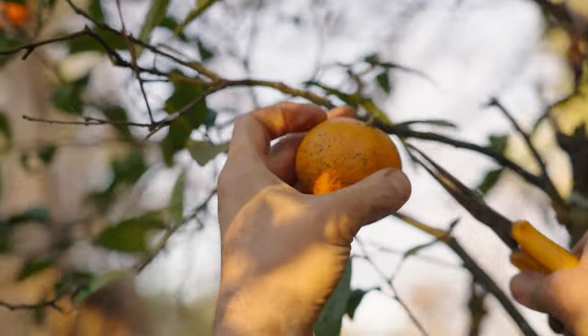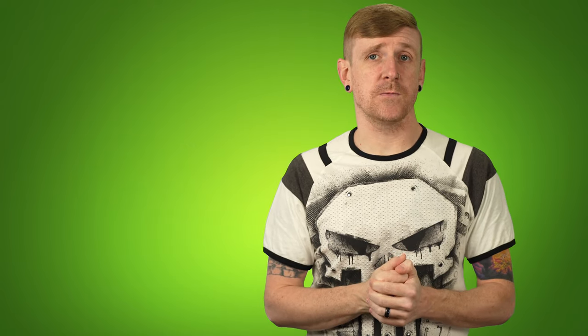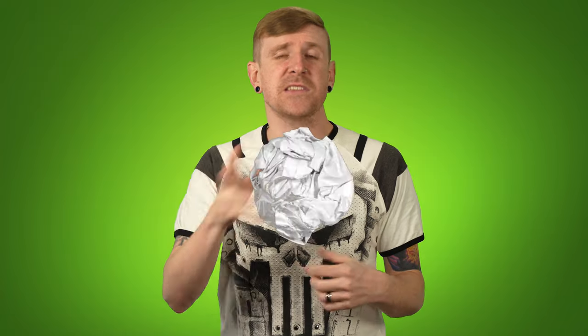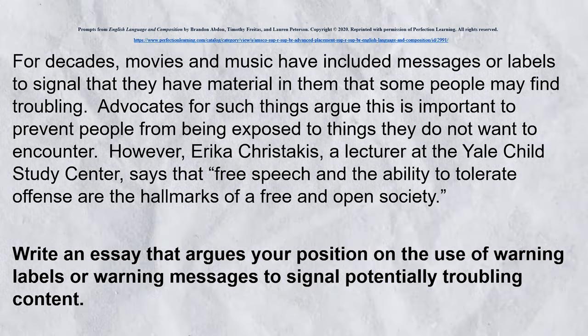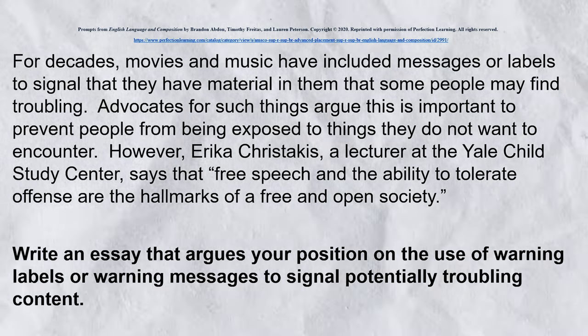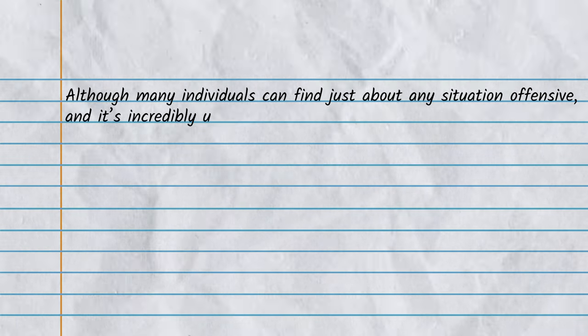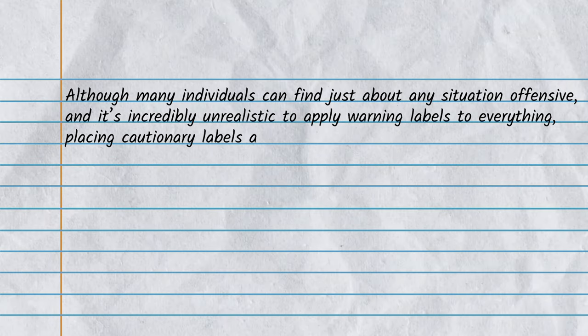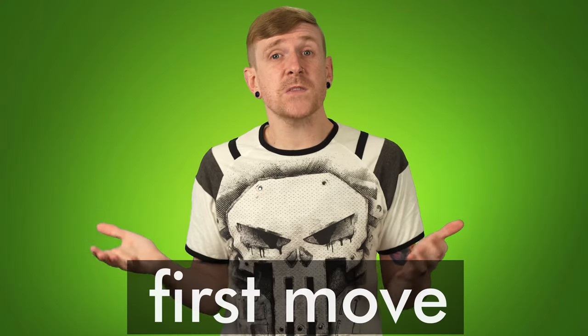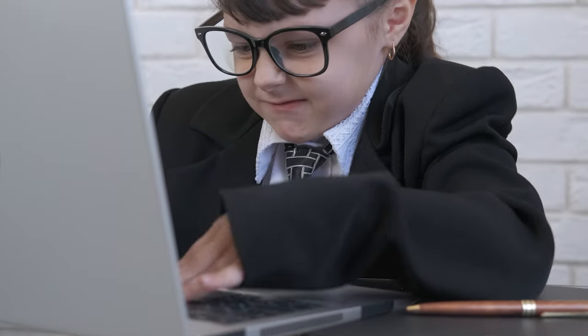Back to the show. When you're writing an argument and you begin picking your examples for your body paragraphs, you want to make sure that you follow the direction of your thesis. Before I show you the thesis we're going to be working with, I want to remind you of the prompt that we're responding to — it comes from the AMSCO Lang and Comp textbook and it can be seen right here on your screen. The thesis we're going to rely on for direction: 'Although many individuals can find just about any situation offensive and it's incredibly unrealistic to apply warning labels to everything, placing cautionary labels and ratings on commonly agreed upon troubling content is appropriate.' Based on this thesis, the first move I have to make is to concede that anyone can find just about anything offensive, and also that it's incredibly unrealistic to apply warning labels to everything.